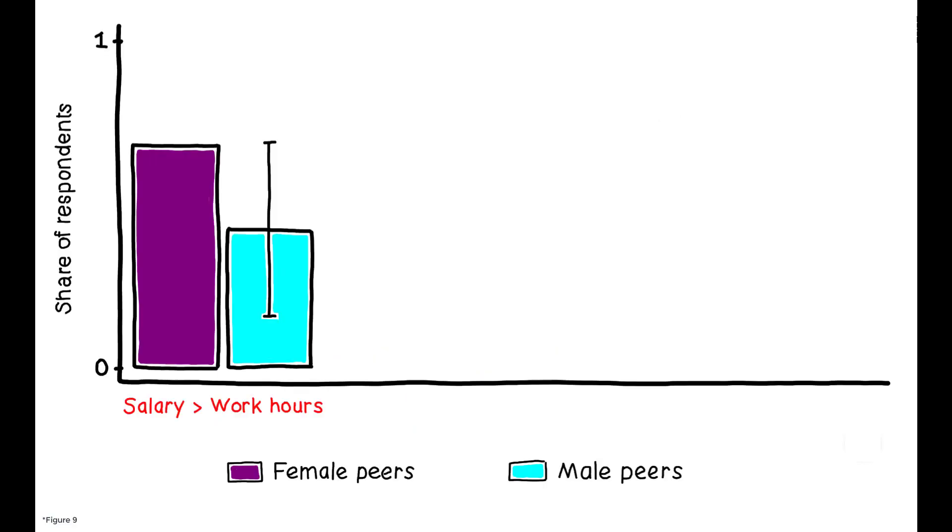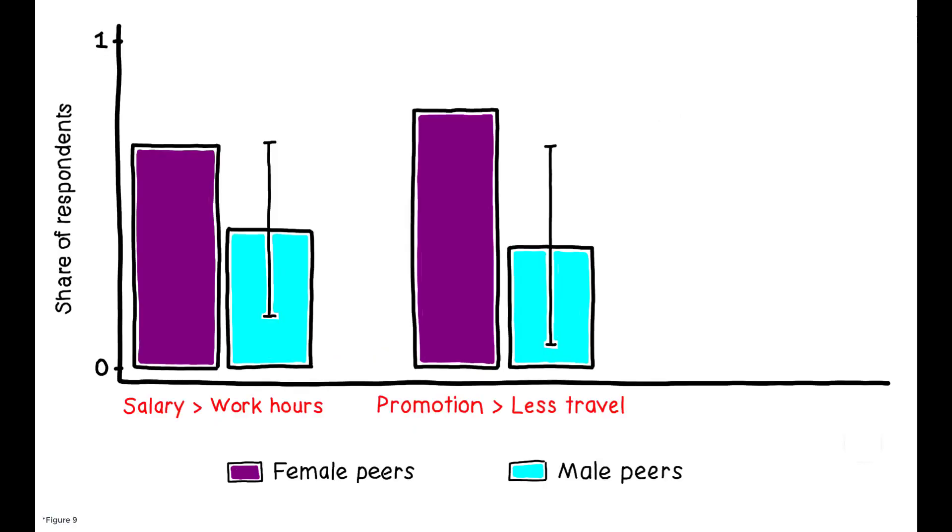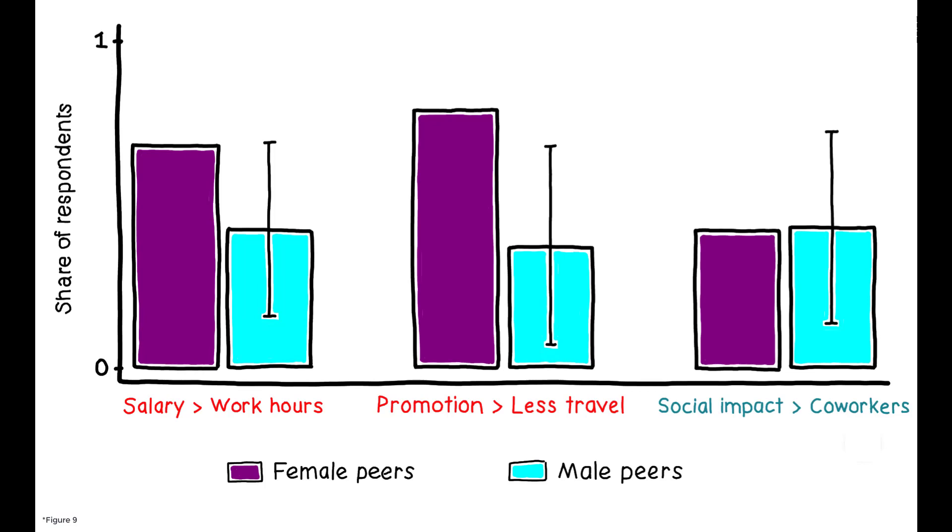The results show that when presented with a trade-off, single women were less likely to choose the option with higher professional value when they expected their answers to be shared with male rather than female peers. In contrast, when no such trade-off was apparent, single women's responses were unaffected by their group's gender composition.